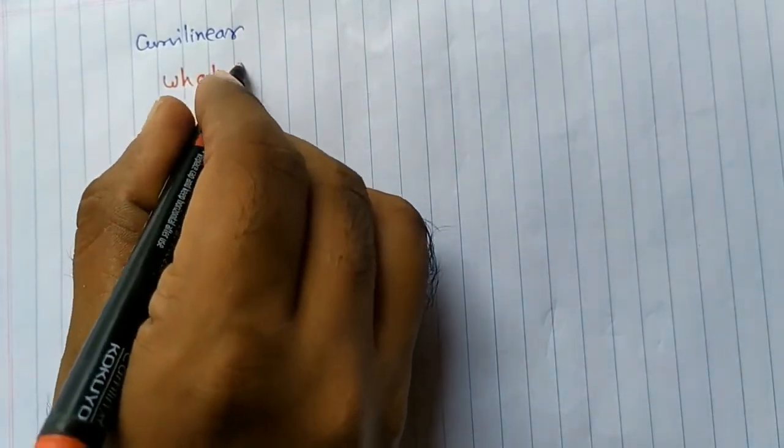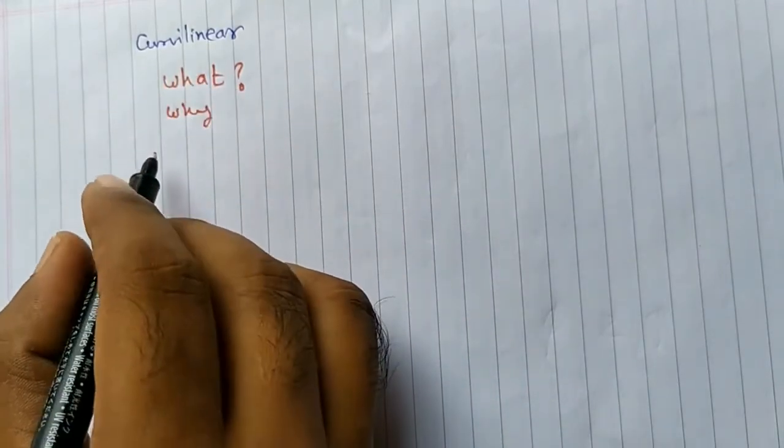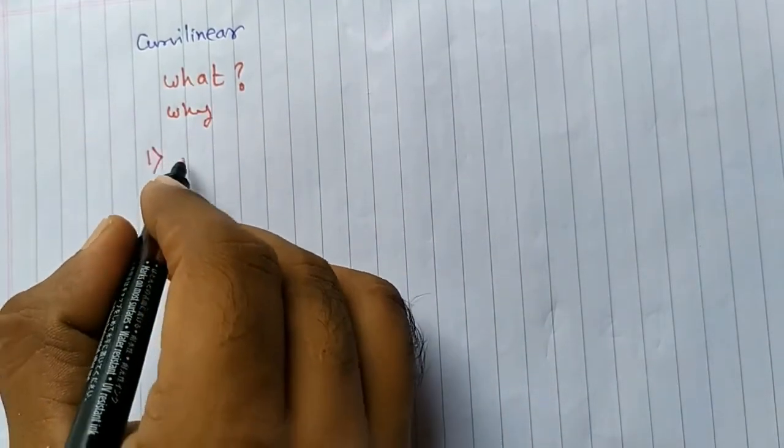Welcome to this lecture. In this lecture we are going to see the cylindrical coordinate system. But before going to the cylindrical coordinate system, let us revise what we did in the last lecture. In the last lecture we started with the curvilinear coordinate system and then we understood what a coordinate system is and why we need one. Then we went for the most commonly used coordinate systems.